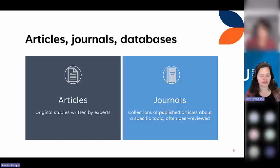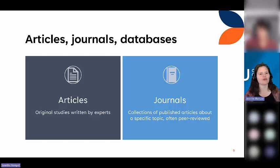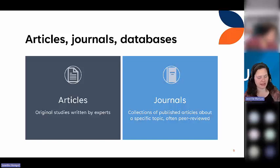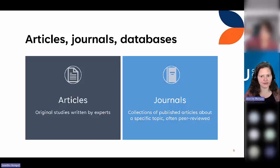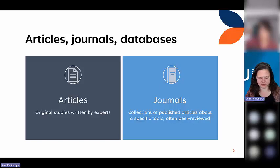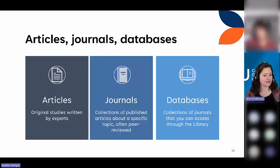Articles are published in journals. Journals usually publish on a regular basis — quarterly, twice a year, every quarter — so they're called periodicals or journals. Journals are often, not always, peer-reviewed or scholarly. Generally, a peer-reviewed article has been reviewed by experts in the field to make sure it's up to standards for publication. Peer review is really important for making sure your items are reliable. Articles are published in journals, which are collected in databases.